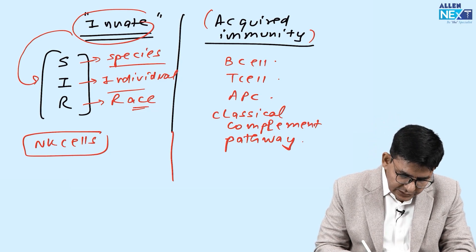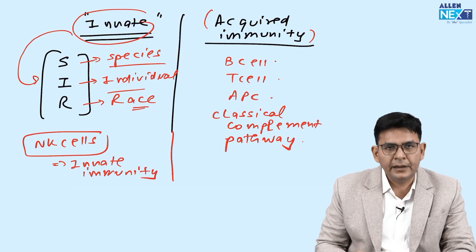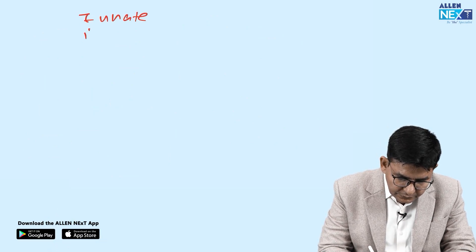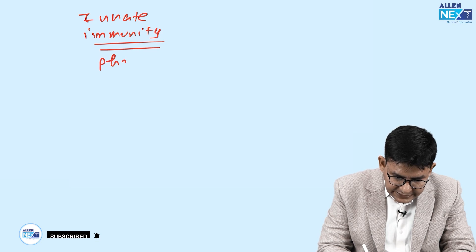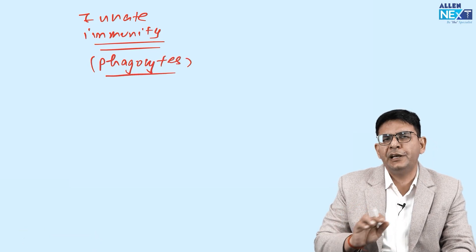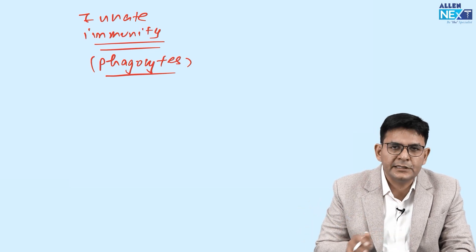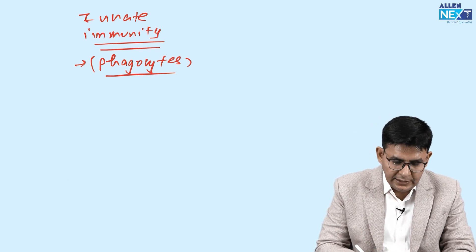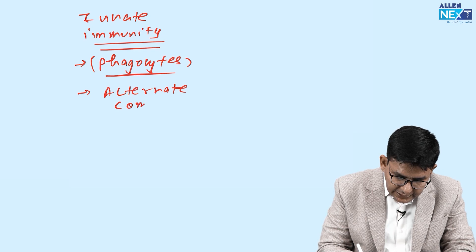For example, NK cells — natural killer cells — are part of innate immunity. Some things are shared between innate and acquired immunity. Phagocytes, for instance, are said to be part of innate immunity as well. So it is not strictly exclusive — some components are shared between both.